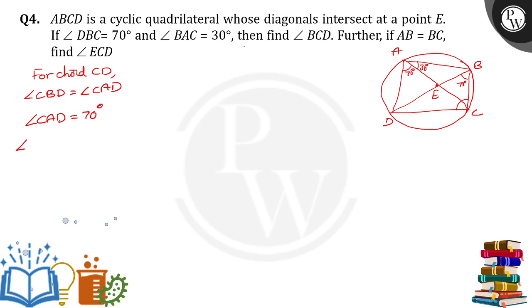Now what will happen? Angle BAD is equal to 70 plus 30 degrees. The total angle is equal to 110.